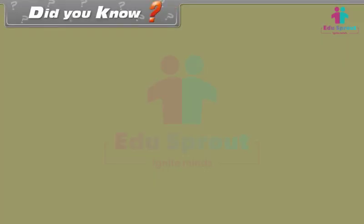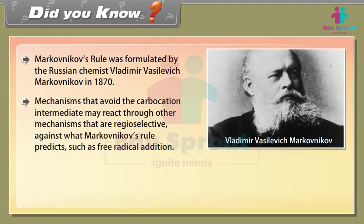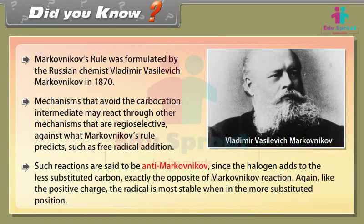Did You Know? Markovnikov's rule was formulated by the Russian chemist Vladimir Vasilyevich Markovnikov in 1870. Mechanisms that avoid the carbocation intermediate may react through other mechanisms that are regioselective against what Markovnikov's rule predicts, such as free radical addition. Such reactions are said to be anti-Markovnikov, since the halogen adds to the less substituted carbon — exactly the opposite of Markovnikov's reaction. The radical is most stable when in the more substituted position.